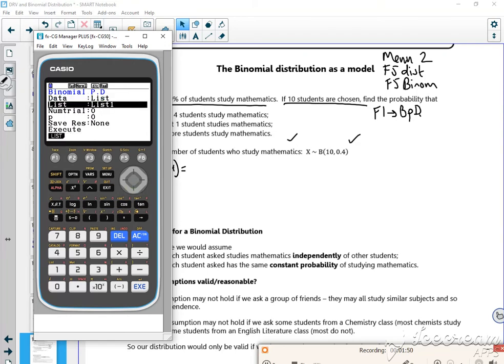So my num trials is 10, p-value is 0.4. I need to change data into variable there. Because if you put your calculator in exam mode, it's quite good actually that just happened. It can switch that, so you need to switch it back to variable. And then x is 4.